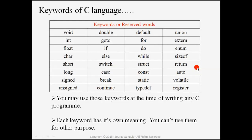In a later section, we will see that int, float, and char are some kind of data types, which tells the compiler what type of value we want to store and use. You may use these keywords at the time of writing any C program, and each word has its own meaning. You can't use them for other purposes except their own.